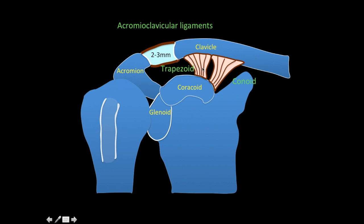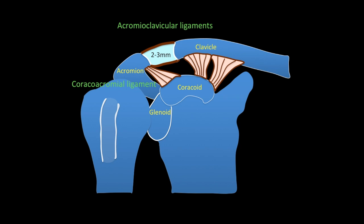It is not important to differentiate between the two CC ligament components — just remember that the coracoclavicular ligament connects the coracoid process to the clavicle. The third structure is the coracoacromial ligament, which is not a stabilizer of the AC joint — I'll discuss why it's included later. Importantly, the inferior border of the acromion and clavicle normally lie in the same plane. When they are not aligned, it indicates AC joint subluxation or dislocation. The superior borders may or may not be aligned normally, so it is the inferior border that matters.